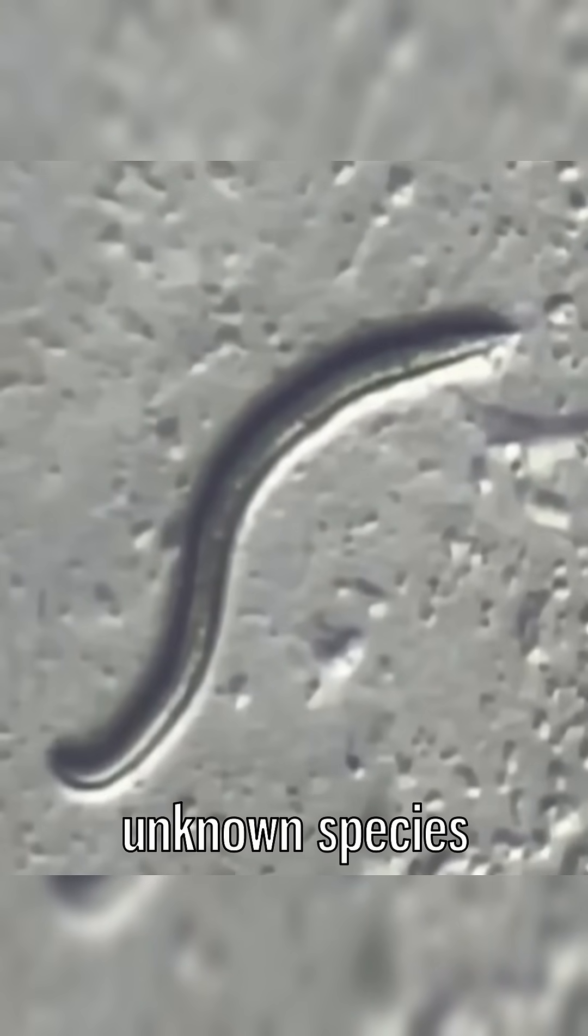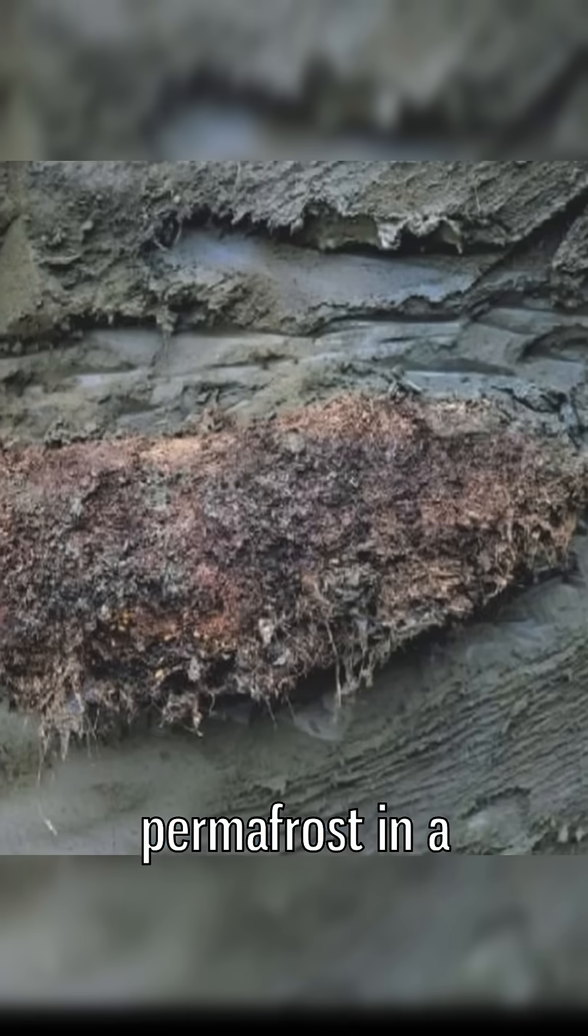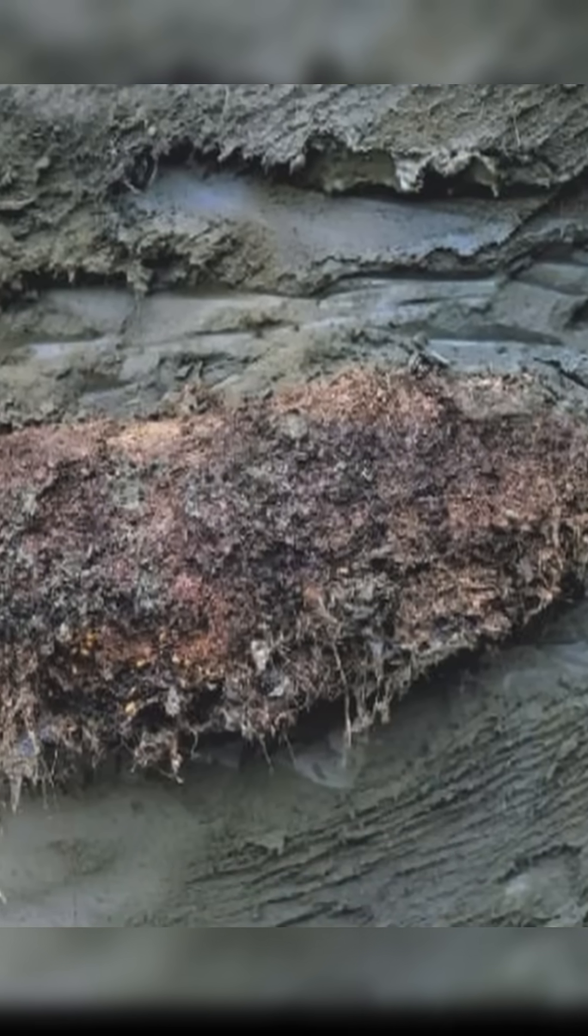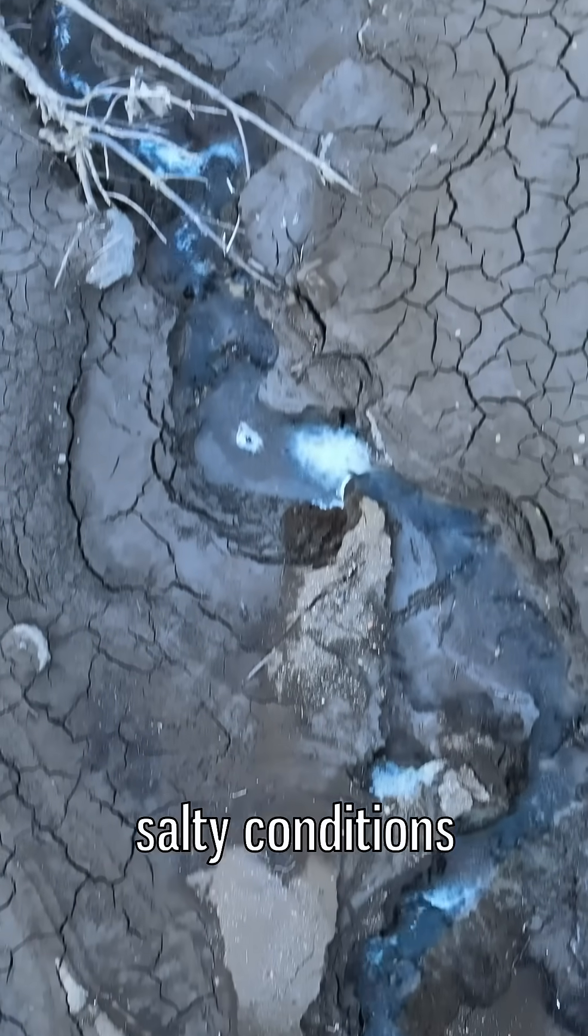The roundworm, of a previously unknown species, survived 40 meters below the surface in the Siberian permafrost in a dormant state known as cryptobiosis. Organisms in a cryptobiotic state can endure the complete absence of water or oxygen and withstand high temperatures, as well as freezing or extremely salty conditions.